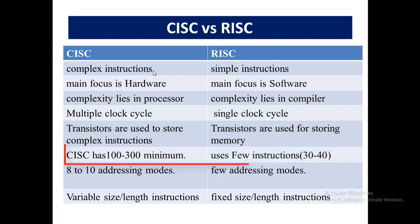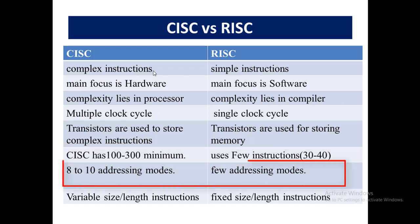CISC has a minimum of 100 to 300 instructions, and it can go beyond 2000 to 3000 instructions to perform a single task. While on the other hand, RISC uses few instructions — it may be 30 to 40 instructions. Since CISC has more complex and lengthy code, it needs more addressing modes to calculate the addresses of operands, supporting 8 to 10 addressing modes, while RISC has very few addressing modes as it has simple instructions.